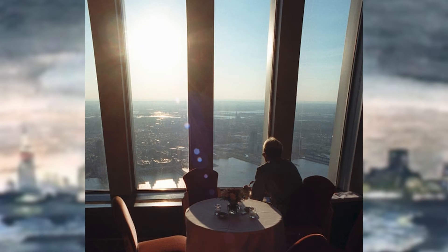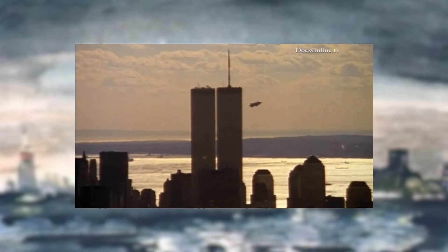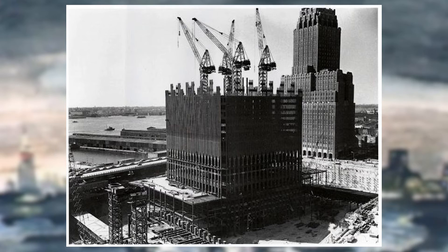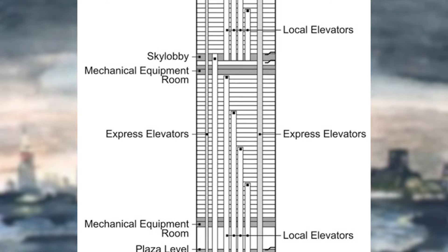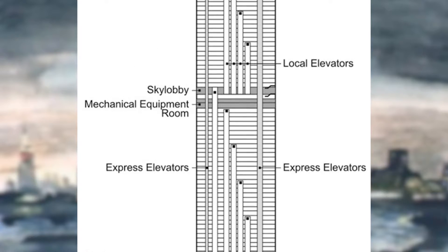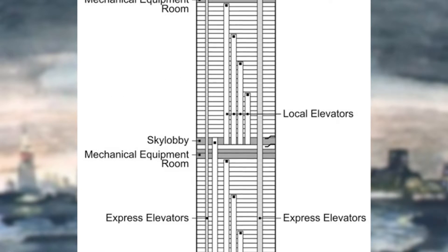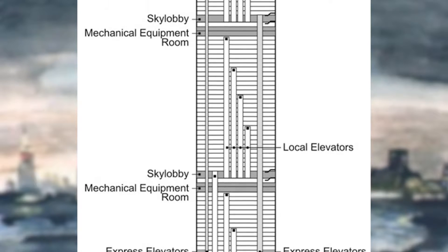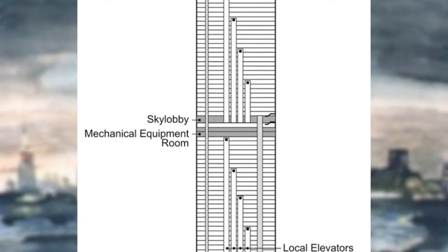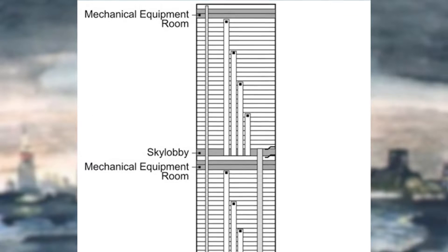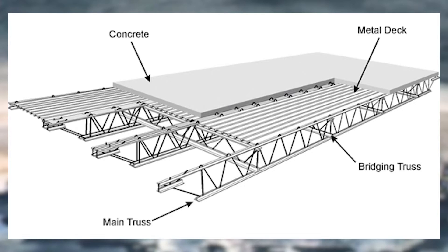Sky lobbies are also typically used today, but at this time this was very innovative. By dividing the structure into thirds, these interchanging floors were accessed by large express elevators and provided the opportunity for occupants to switch to smaller local elevators that serviced a particular section of floors. This element allowed for the stacking of elevators, thereby decreasing the number of required elevator shafts. The floors were 4-inch thick concrete on a steel deck, supported by a 6-foot 8-inch grid of pre-fabricated trusses.